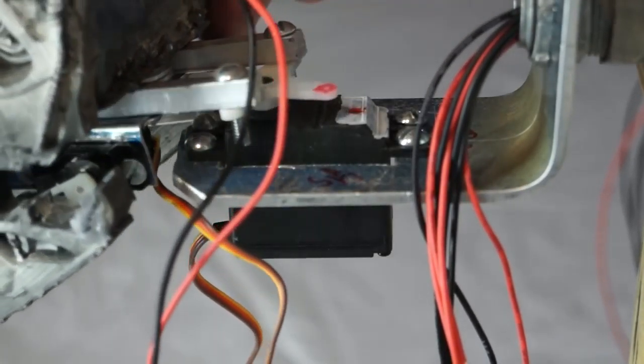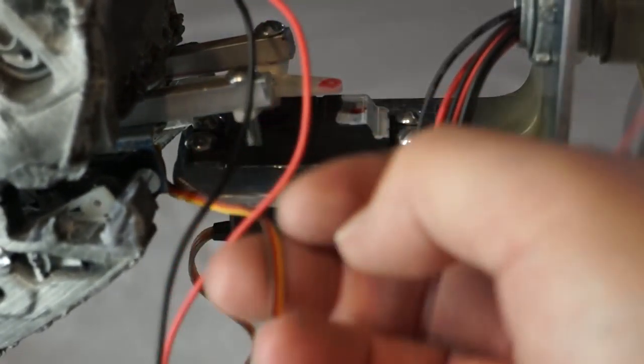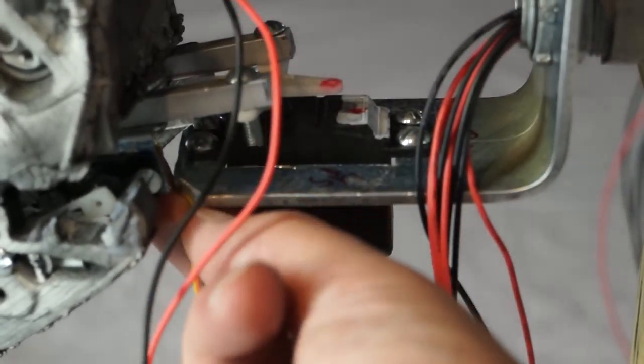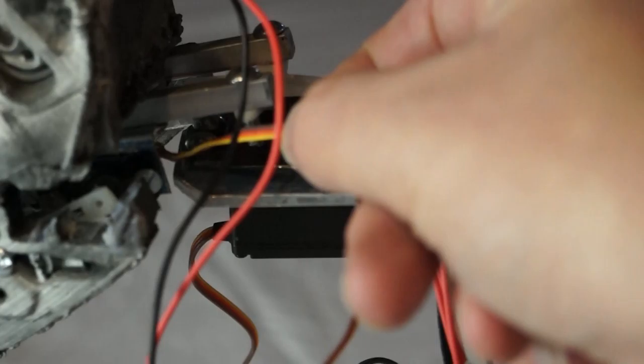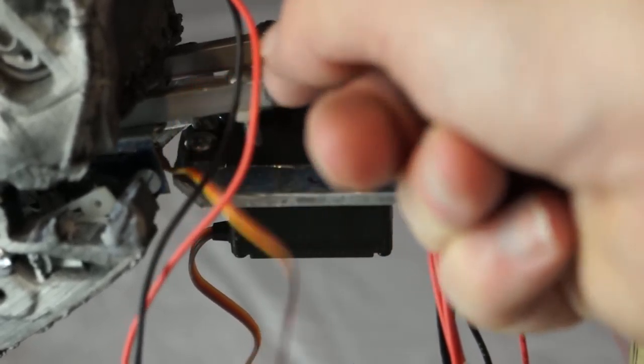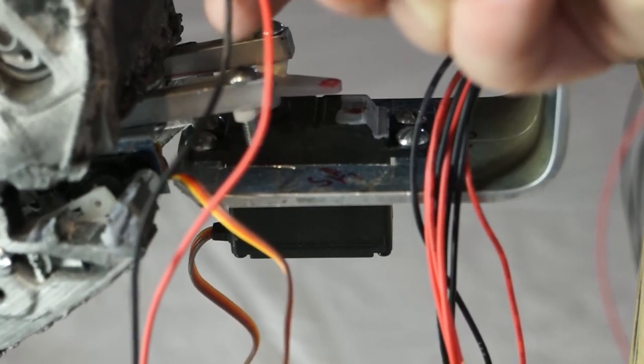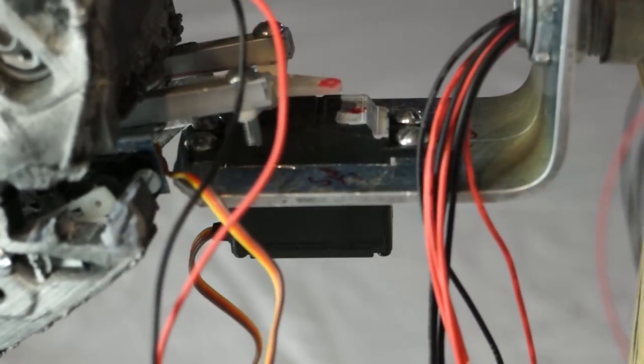We have the servo here that we've talked about before that allows Rex's neck to swing left and right. Made a couple of more modifications to this mount because what I found was that when I cut back the linear actuators, now we were hitting here.